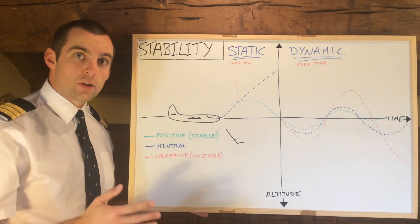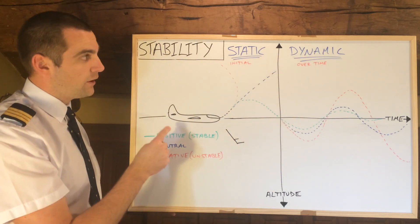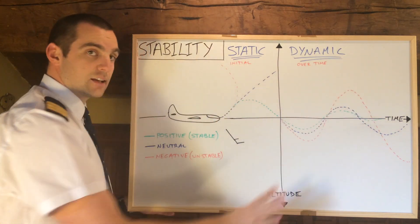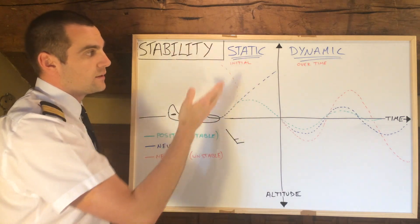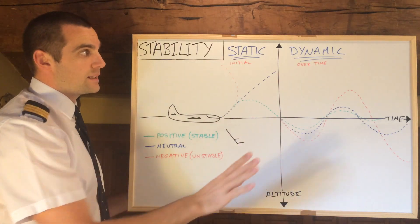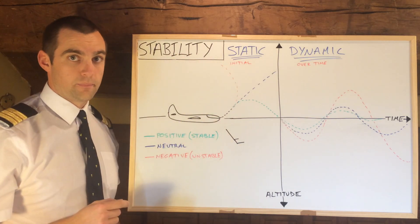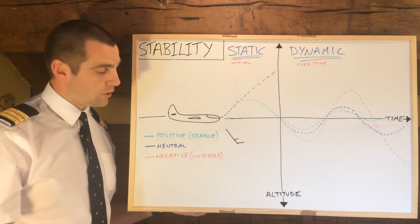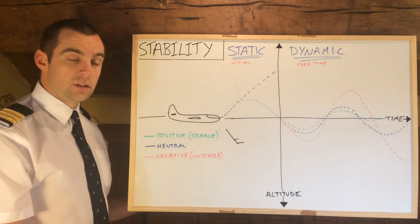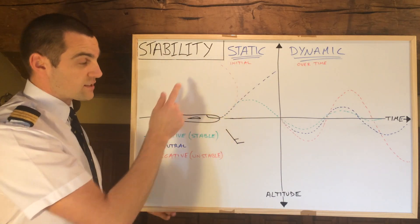So for an aircraft to possess positive, neutral, or negative dynamic stability, it must have positive static stability. Otherwise, it never gets to that second part of the graph — the lines diverge away from that timeline, and we cannot have dynamic stability of any sort if it's neutrally or negatively statically stable. Depending on where you're studying from, you might see 'stable' or 'positive,' or 'unstable' or 'negative' — they mean the same thing.